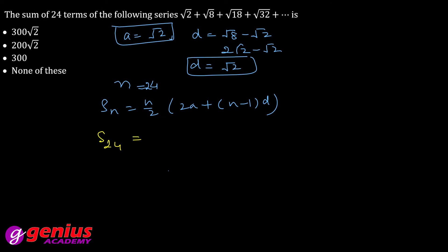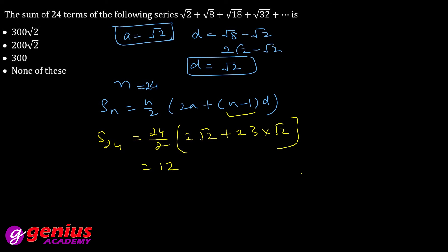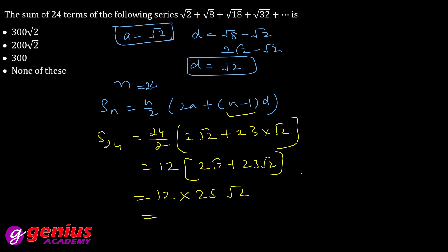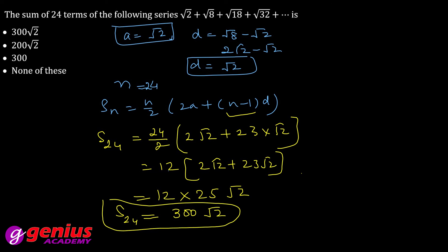So S₂₄ = (24/2)(2√2 + 23·√2) = 12 × (2√2 + 23√2) = 12 × 25√2 = 300√2. So S₂₄ = 300√2, which is the final answer.